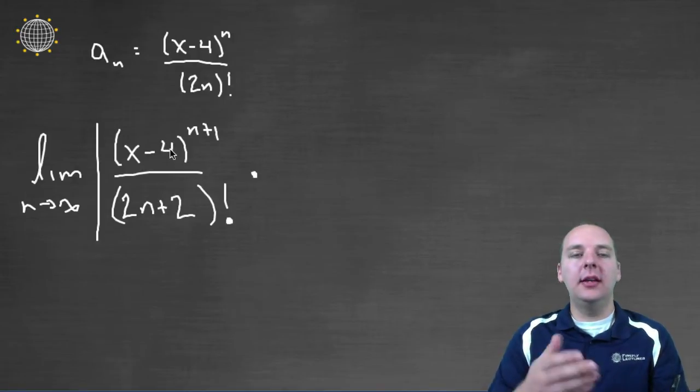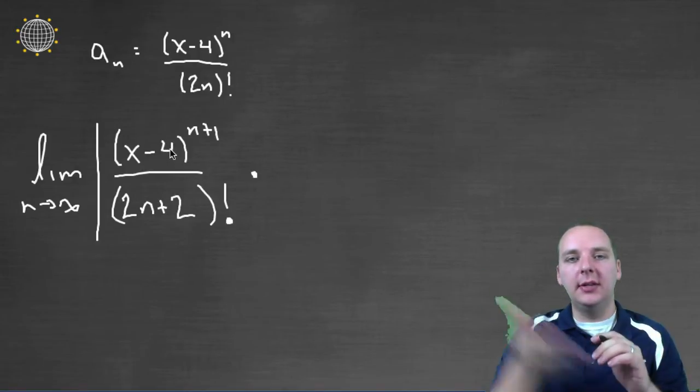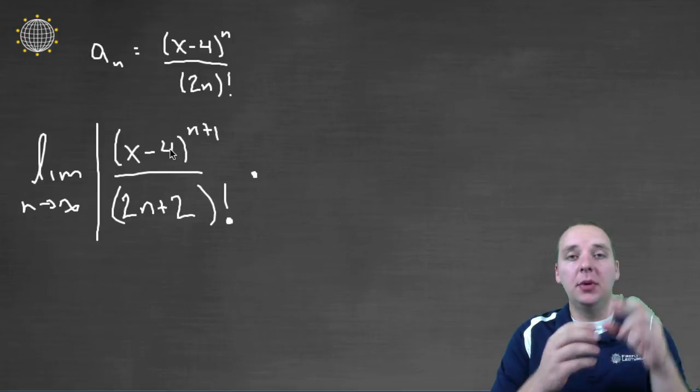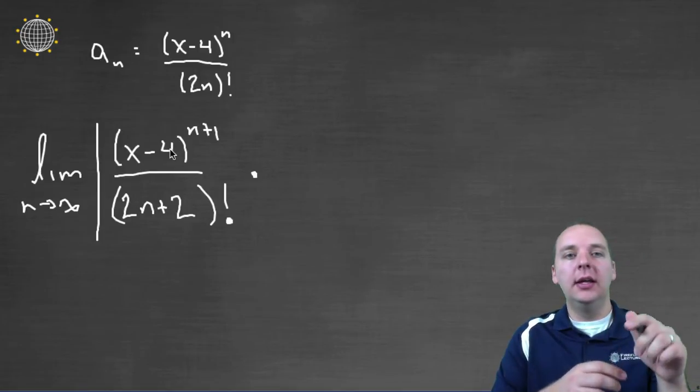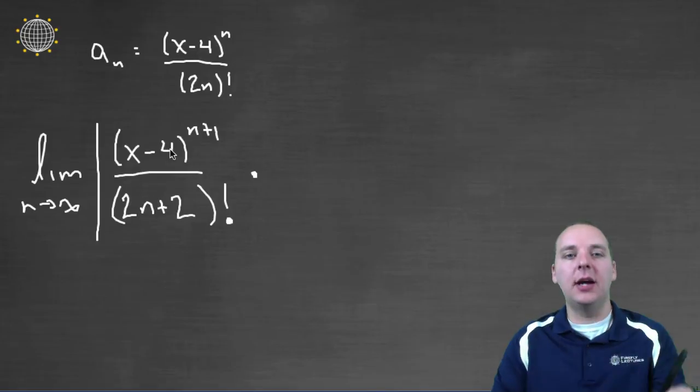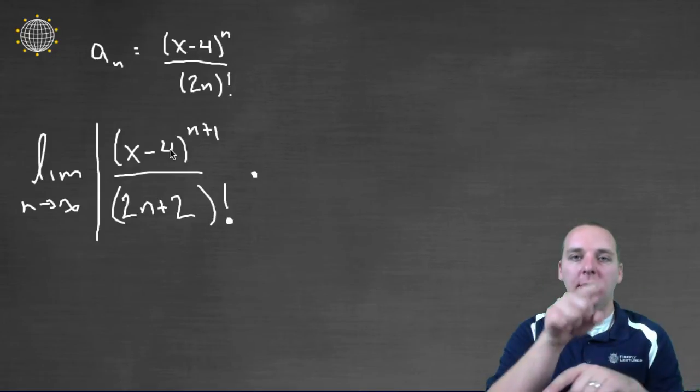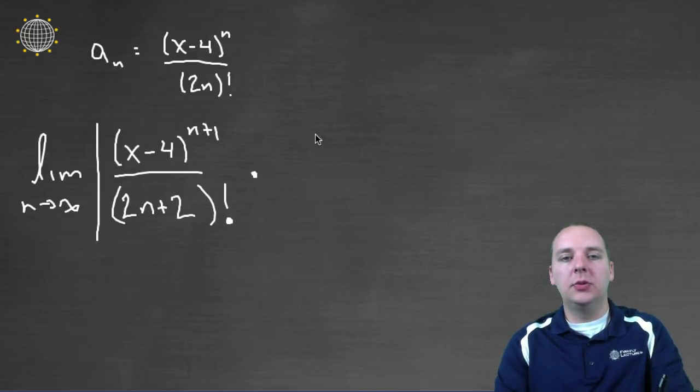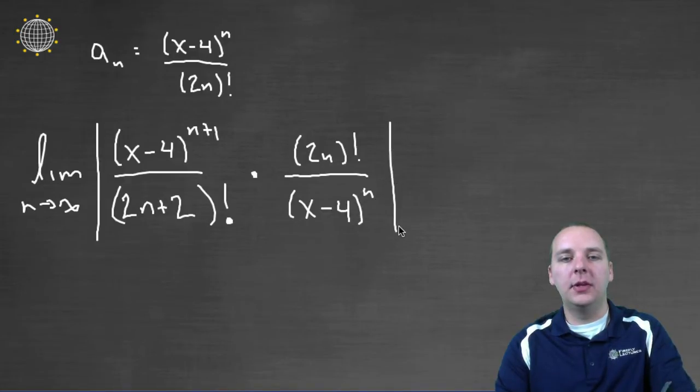So that's two times the quantity n plus one, so two n plus two factorial, times, and then rather than taking a sub n plus one dividing by a sub n, because both of those are a fraction, what we typically do is for the a sub n, since it's a fraction, we will multiply by the reciprocal. So we'll have two n factorial divided by x minus four to the n, in absolute values.